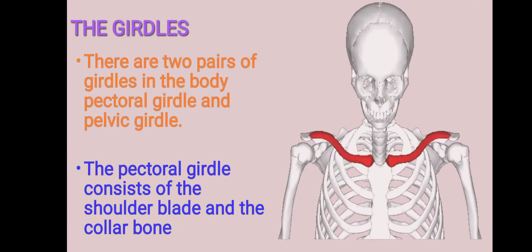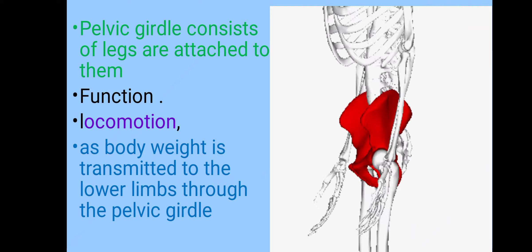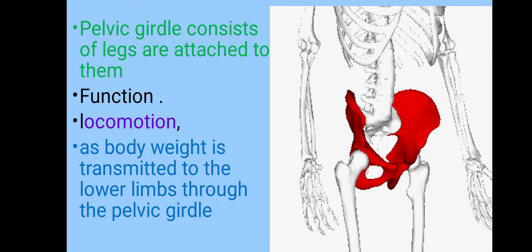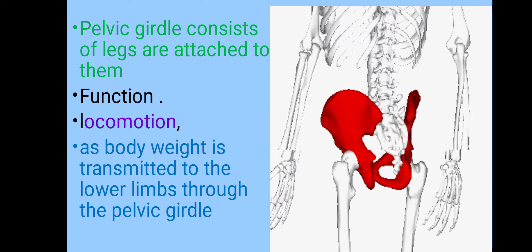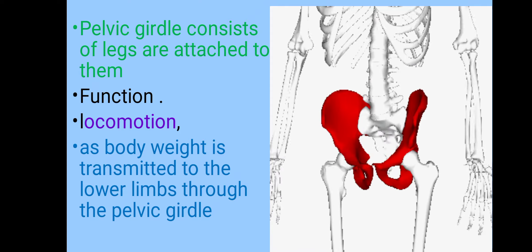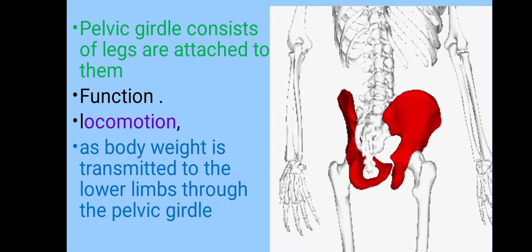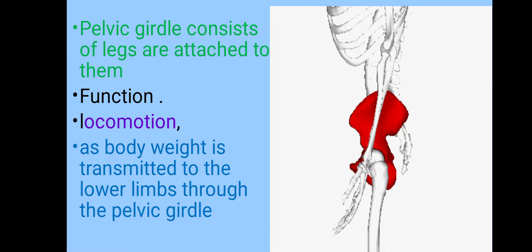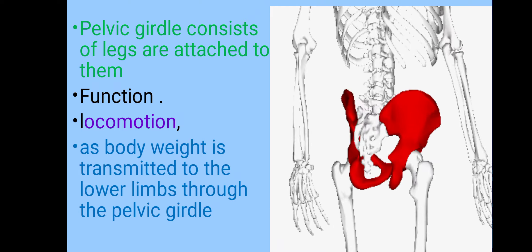The pectoral girdle consists of the shoulder blade and the collar bone. The pelvic girdle consists of legs that are attached to them. Its function is locomotion, and it also helps transmit body weight to the lower limbs through the pelvic girdle.